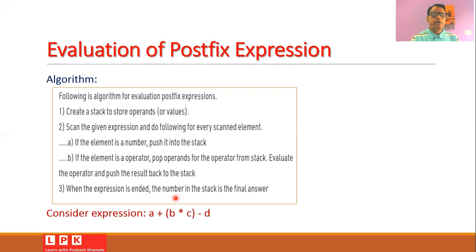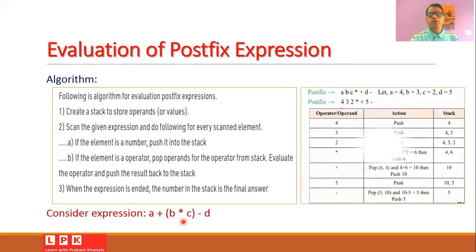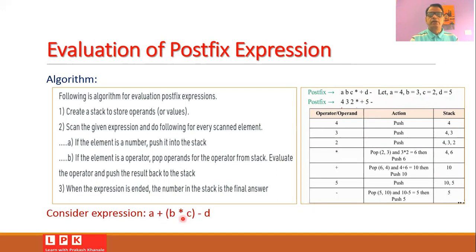For example, given the arithmetic expression a plus b times c minus d, we can write its postfix form as 'a b c star plus d minus'. Suppose the value of a is 4, b is 3, c is 2, and d is 5. The postfix form becomes '4 3 2 star plus 5 minus'. Evaluating: 2 times 3 equals 6, plus 4 equals 10, minus 5 equals 5. So the result is 5.